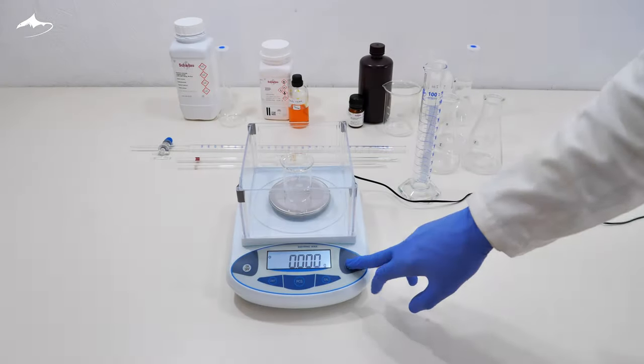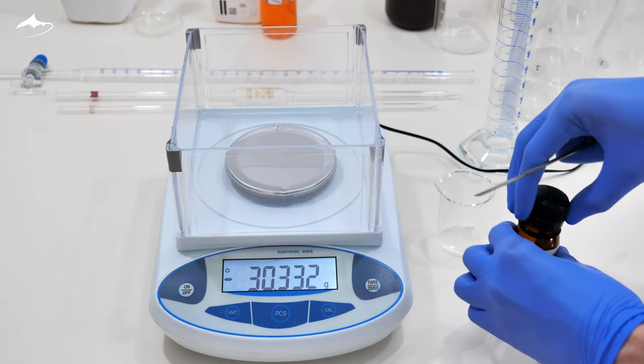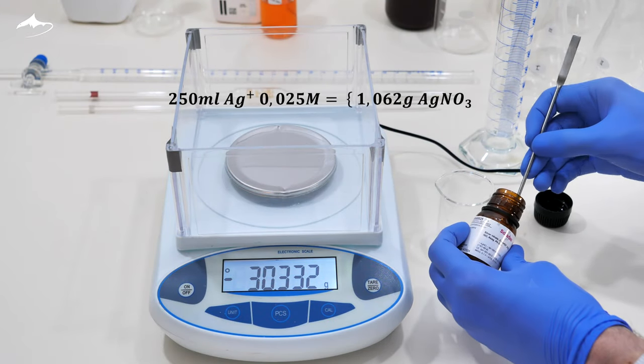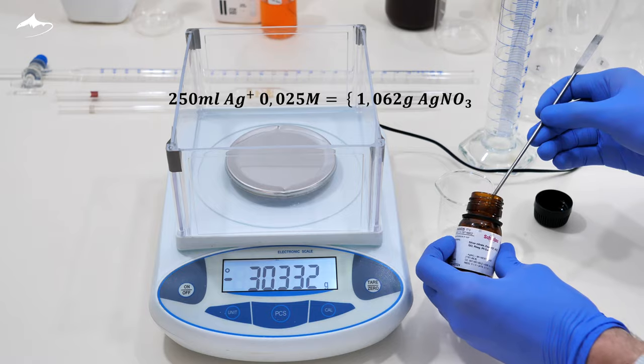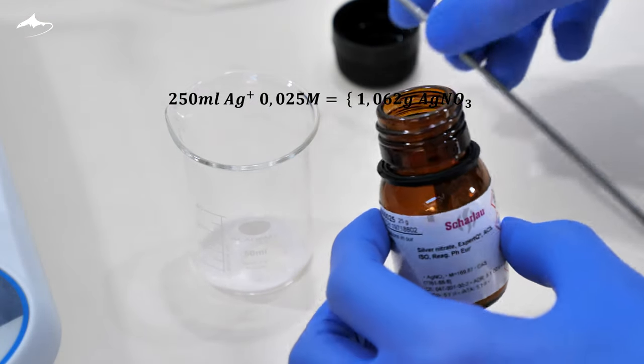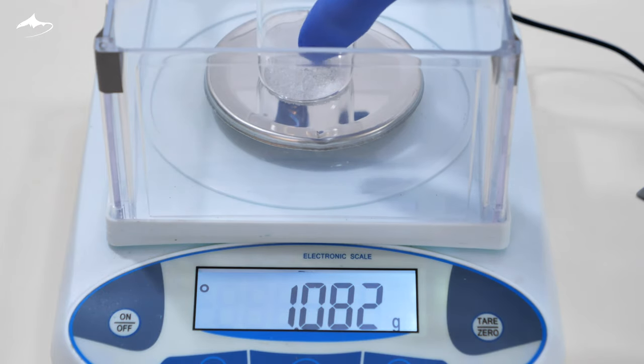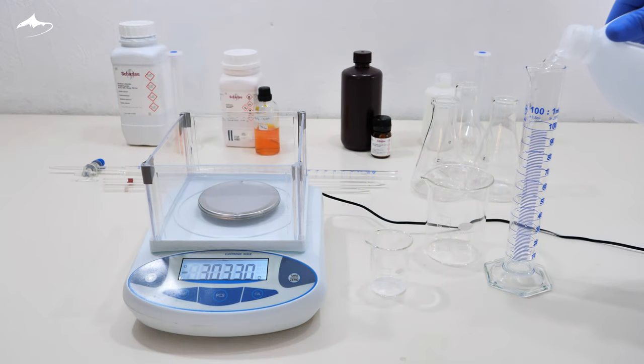Now, the last of the reagent solutions, the titrant solution. Analytical grade silver nitrate is used. In order to prepare 250 ml of silver nitrate 0.025 molar solution, approximately 1.06 grams of the nitrate needs to be weighed. Since I am going to standardize it afterwards, it is not necessary to use a volumetric flask, nor to weigh the exact amount, as before.